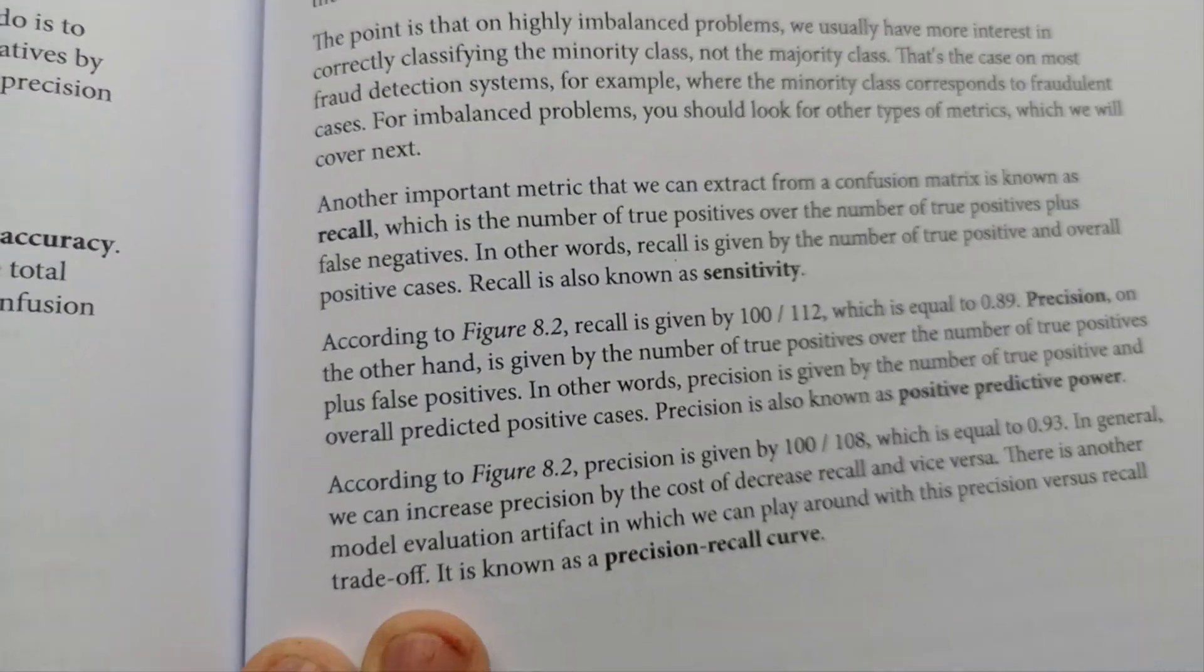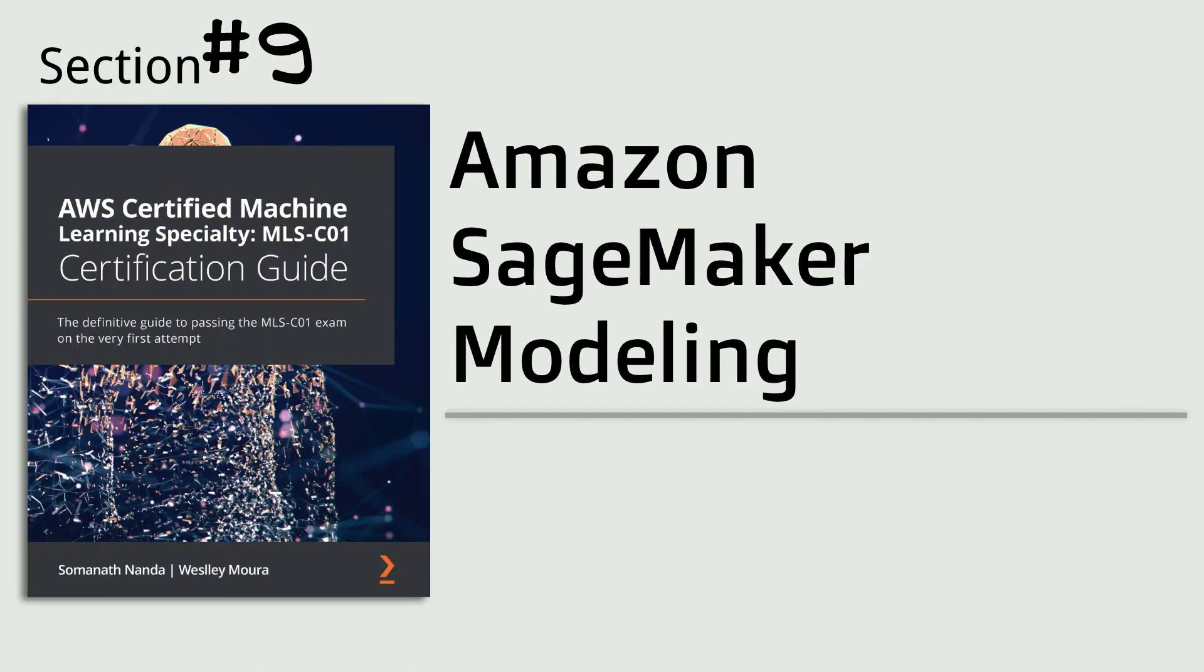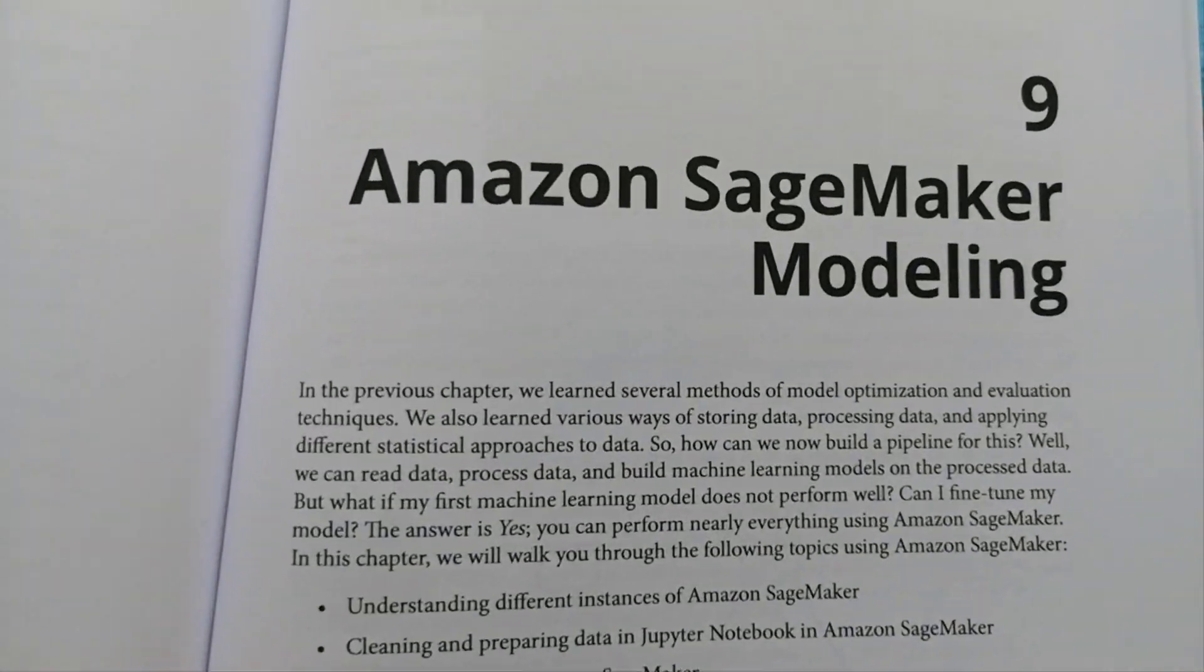And now, it is the last section in this book is section number nine, Amazon SageMaker modeling. Now, I understand why the authors put SageMaker at the end of this book.